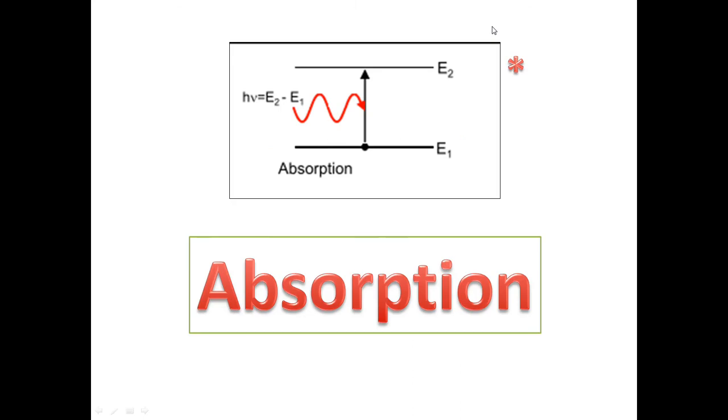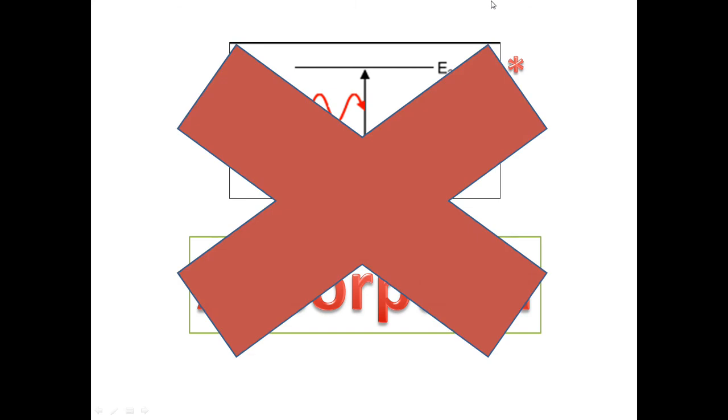Let's look at absorption. This is when a photon of energy E2 minus E1 is incident on an electron. The electron then absorbs this photon and uses the subsequent energy to excite itself from the ground state E1 into the excited state E2. This process attenuates your original photon beam as you lose energy to this excitation, and we do not want this.